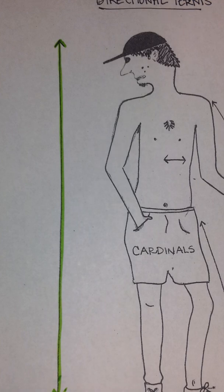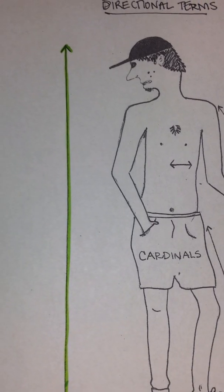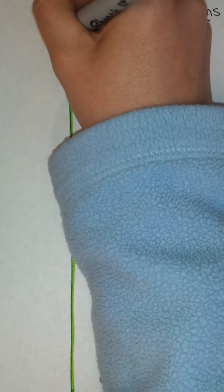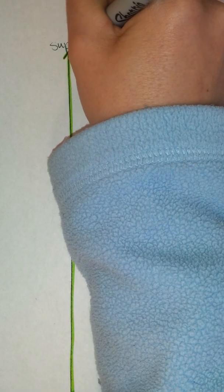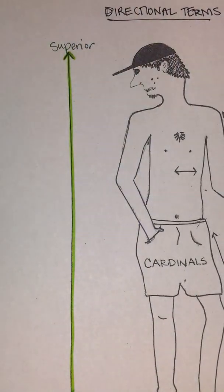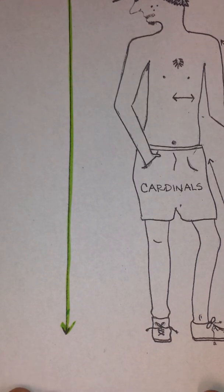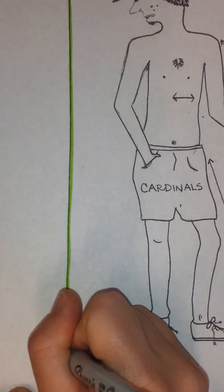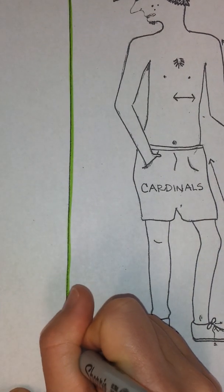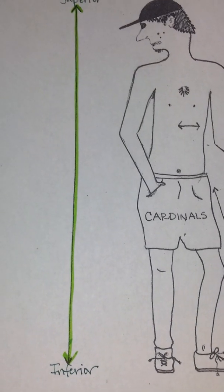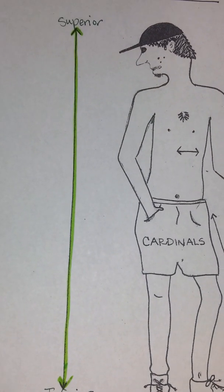If the structure being operated on, palpated, or examined is higher up, we say that it is superior. If it is farther down on the body, we say it's inferior. So structures can be superior or inferior compared to one another.